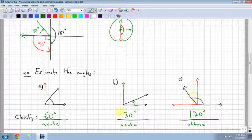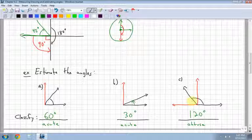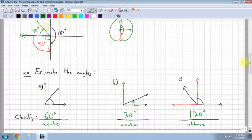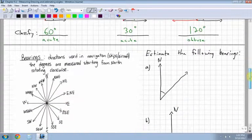So estimate angles. You're not going to be exact because you're not measuring them with a protractor. If we could measure them with a protractor, we would see what they are exactly. But just estimating using a reference.